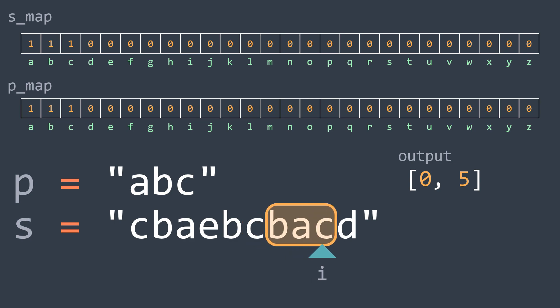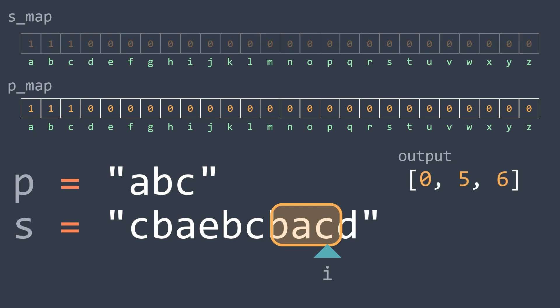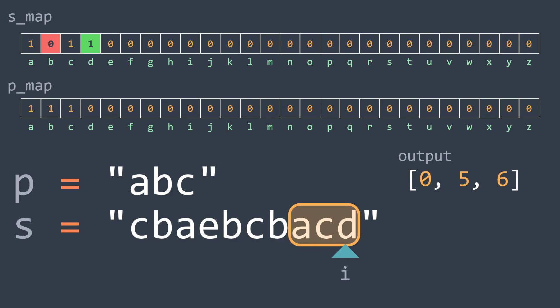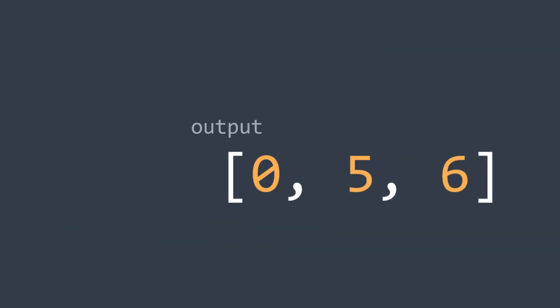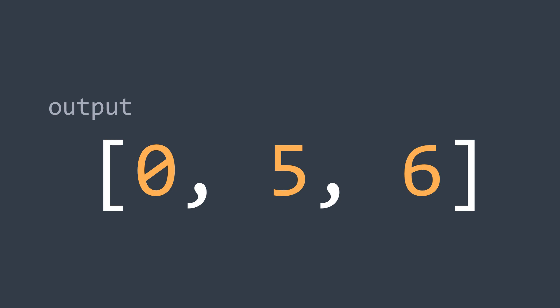At the next index, we decrement c and increment c — also equal, so we push i minus length of p plus 1, which is 6. At the next index, we decrement b and increment d — not equal. We've finished traversing s and found that the indexes of anagrams of p in s are 0, 5, and 6.